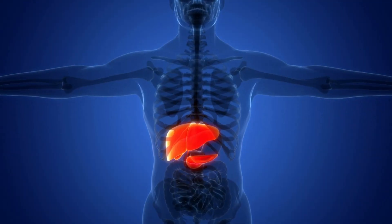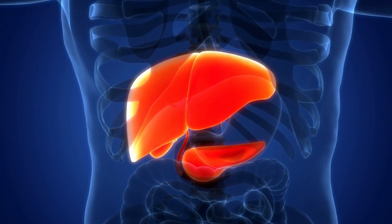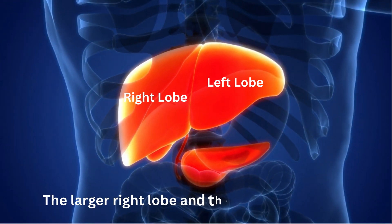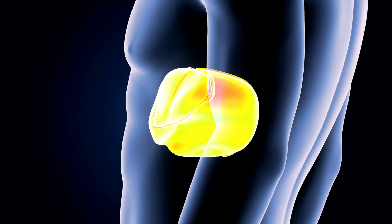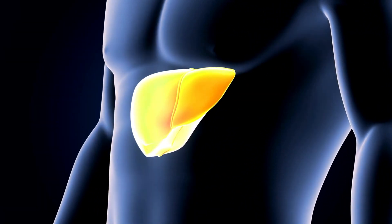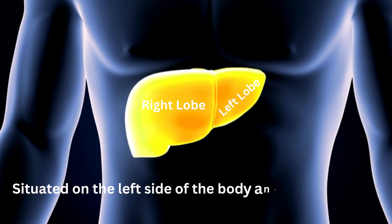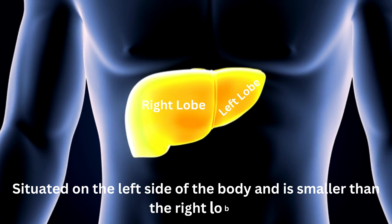The liver consists of two primary lobes: the larger right lobe and the smaller left lobe. The right lobe occupies the majority of the liver's mass and is located on the right side of the body. The left lobe of the liver is situated on the left side of the body and is smaller than the right lobe.